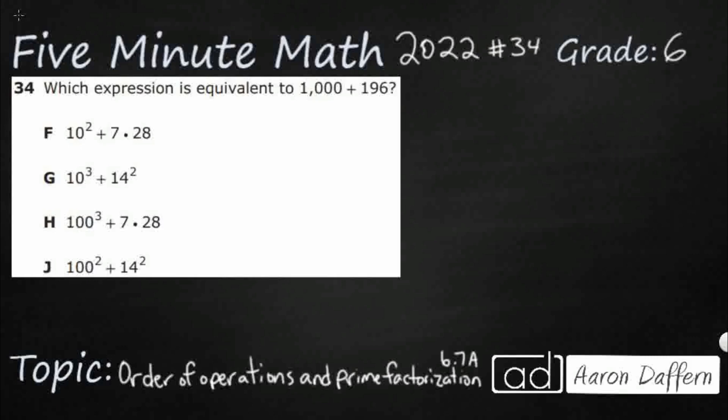So we have an expression and we need to find which expression is equivalent to 1000 plus 196. And it might look like we need to do prime factorization, but if you take a look, all of these are composite numbers. The only prime number I see is 7. Everything else is composite. So really, instead of prime factorization, I think we need to use order of operations. We're just going to take each of those and see which one can get us up to that 1000 plus 196.